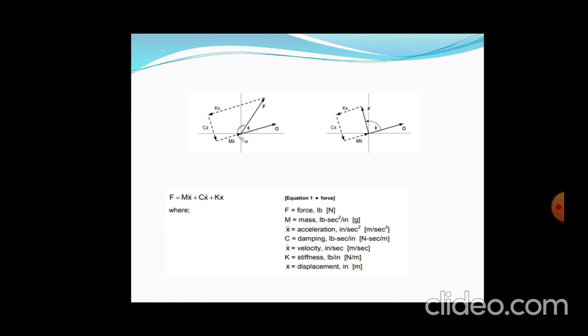F is force, M is mass, x-double-dot is acceleration in meters per second squared, C is the damping coefficient — Newton-second — x-dot is velocity, K is stiffness in Newtons per meter, and X is displacement in meters or inches. The formula is: F = Mx-double-dot + Cx-dot + Kx, where F is the resultant external excitation force.